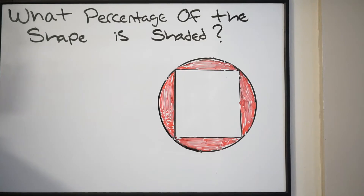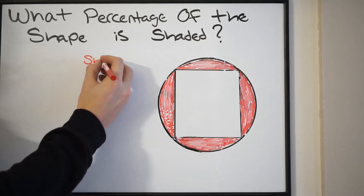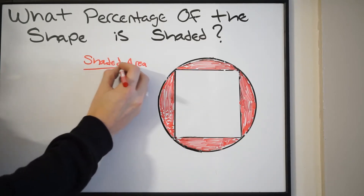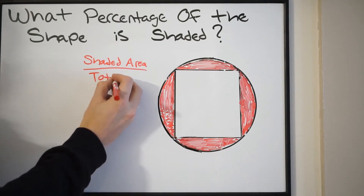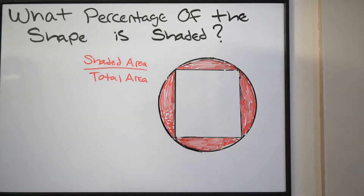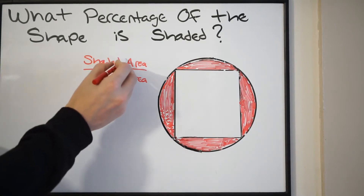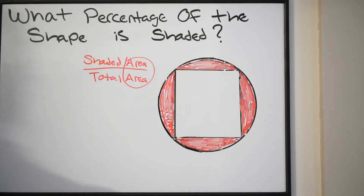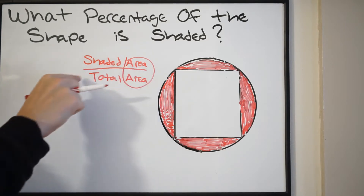In order to find the percentage of the shape that is shaded, we're going to have to take the shaded area and put it over the total area. This is going to give us the percent of the shape that is shaded. Notice that we're talking about area here, so we're going to have to find the area of these shapes. We have a square inscribed in a circle, so it's shaded area over total area.